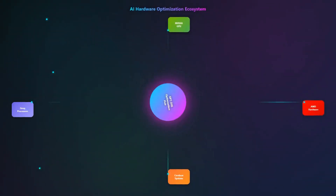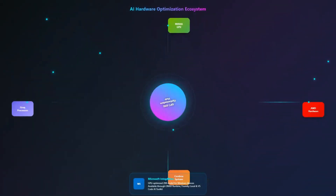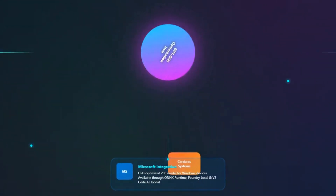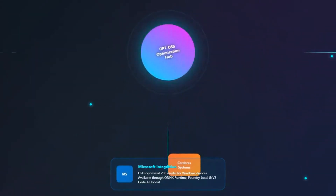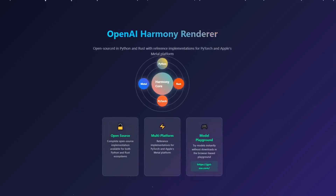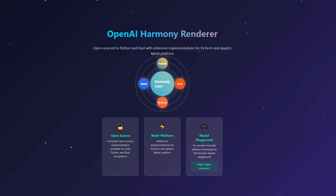On the hardware side, they've worked with NVIDIA, AMD, Cerebras, and Groq to ensure optimized performance across different systems. Microsoft is bringing GPU-optimized versions of the 20B model to Windows devices through ONNX Runtime, available through Foundry Local and the AI Toolkit for VS Code. OpenAI has also open-sourced a Harmony Renderer in both Python and Rust, along with reference implementations for PyTorch and Apple's Metal platform. They've even created an open model playground where you can try these models right now without having to download anything.